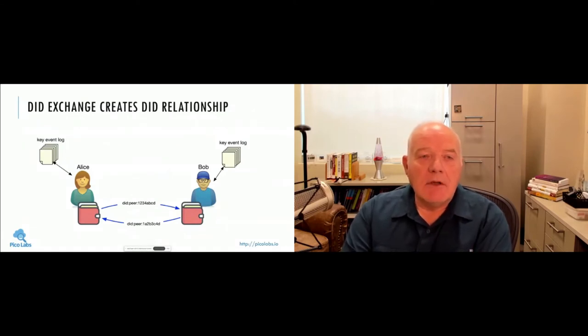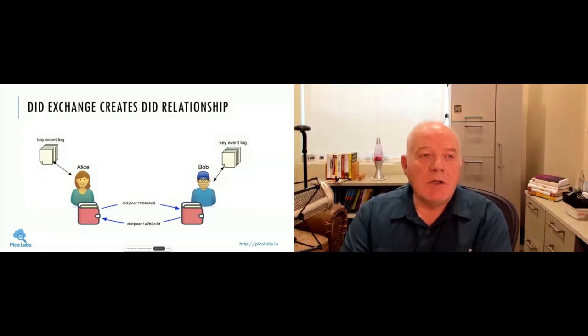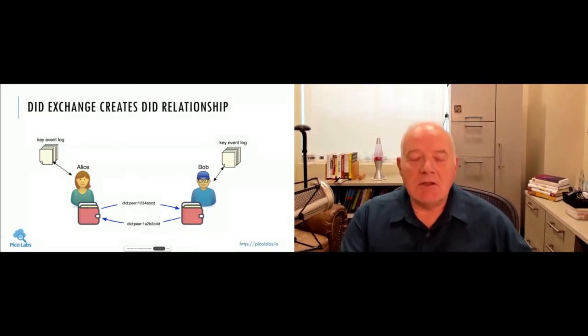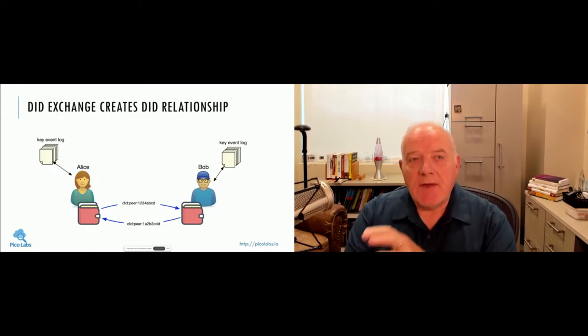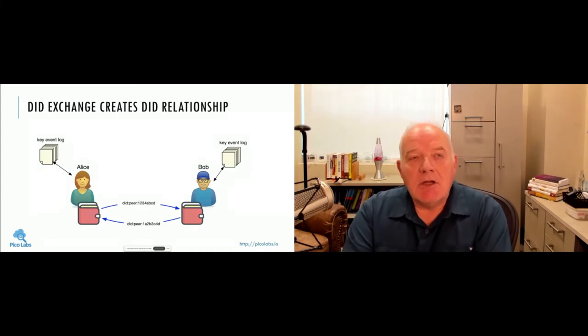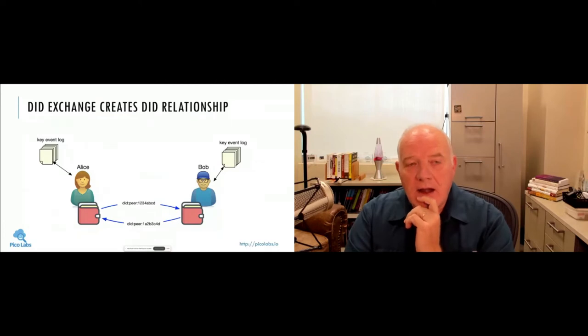If Bob rotates his key, for example, then Alice sees that key event and the cryptographic chain informs her that this is a valid key for Bob and that it's been signed by the previous key. Some people call these micro ledgers because they have this cryptographic property, but nevertheless, the very foundation of this whole idea is that DID exchange creates this DID relationship and that Alice and Bob can have a self-certifying relationship between these keys, or between themselves based on these keys and identified by the DID identifier.